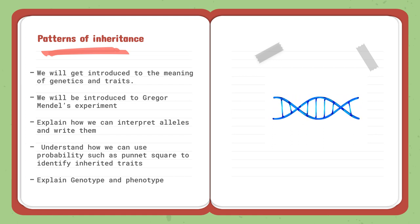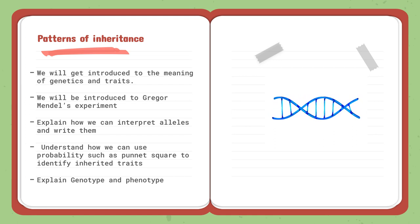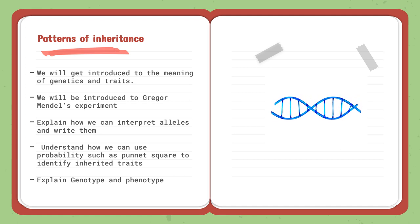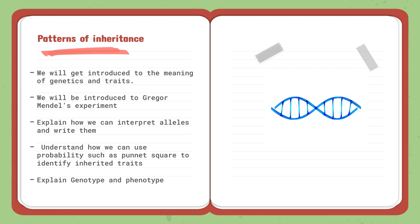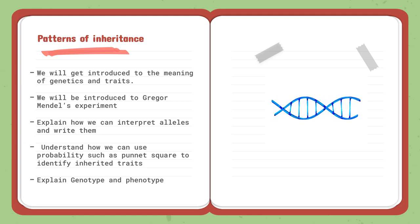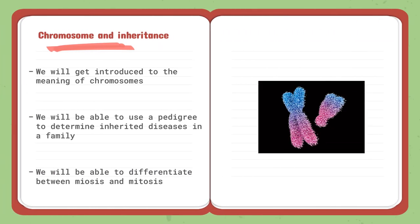We are going to learn how Mendel's experiment led him to be called the father of genetics. Then we will understand what alleles are — dominant alleles, which are more expressed, and recessive alleles, which are less shown. We will learn how to interpret these alleles, understand probability in genetics, and draw a Punnett square to identify inherited traits. We will also explain genotype and phenotype and how they can be distinguished.